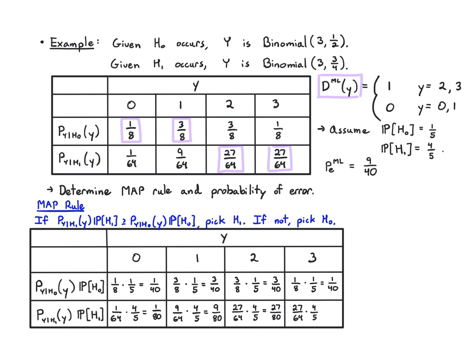I need to pick the highest values. For the MAP rule of Y, I'm going to pick Y equals 1 sometimes and 0 sometimes. In this first entry, I'm going to pick 0 because 1 over 40 is higher. Then I'm going to pick 1 because 9 over 80 is higher. Then 2 because 27 over 80 is higher. And again, 3 because 27 over 80 is higher. Basically, all but the first coordinate go to decision 1.